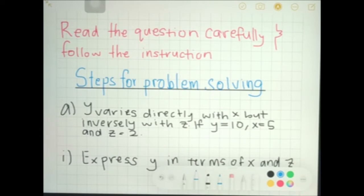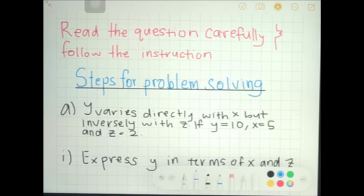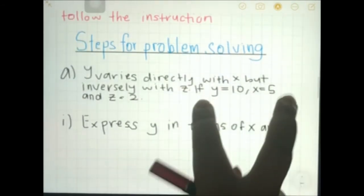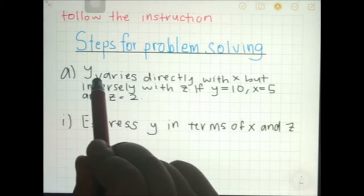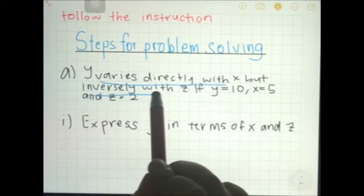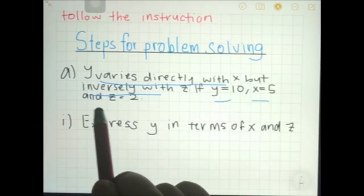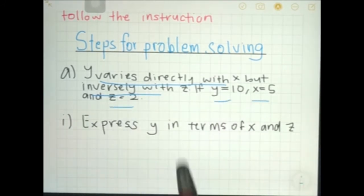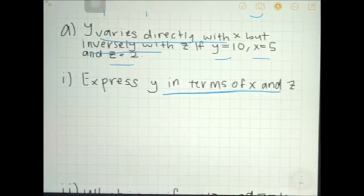To answer questions, we have to read the question carefully and follow the instructions. Steps for problem solving — using this example: y varies directly with x but inversely with z. If y equals 10, x equals 5, and z equals 2, express y in terms of x and z.